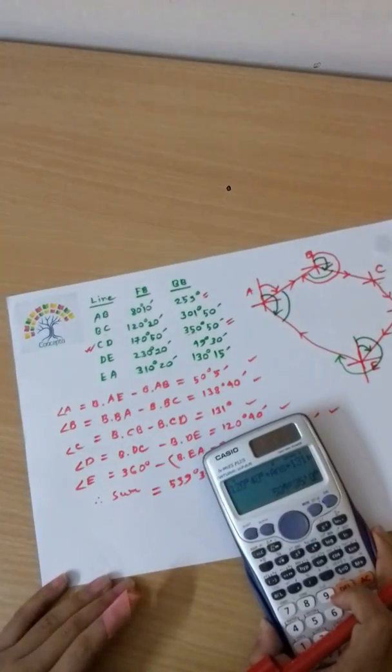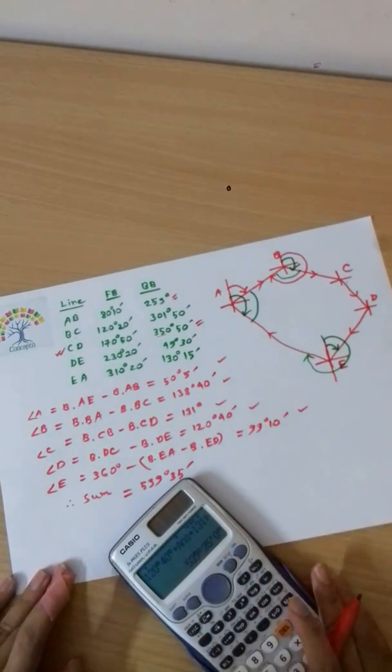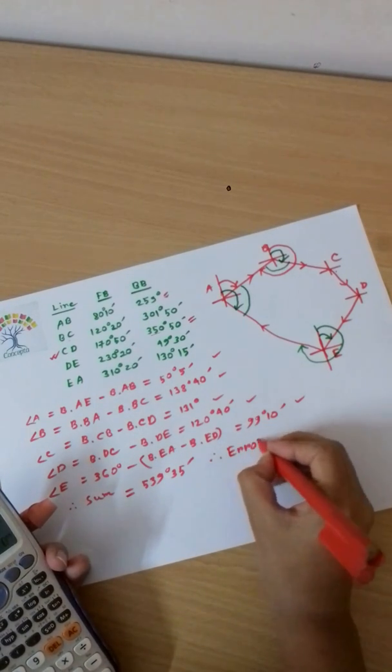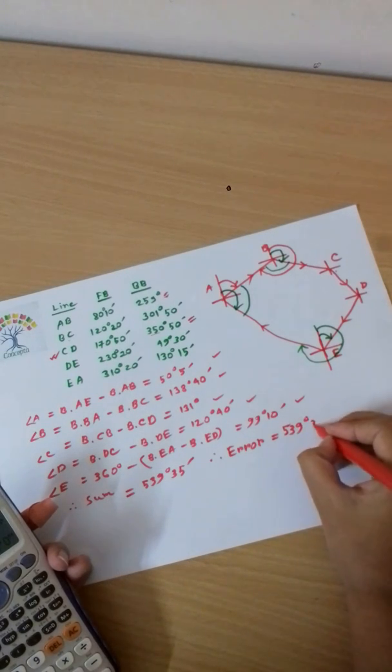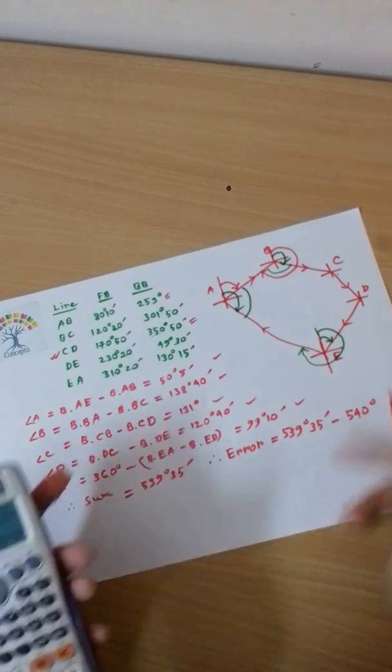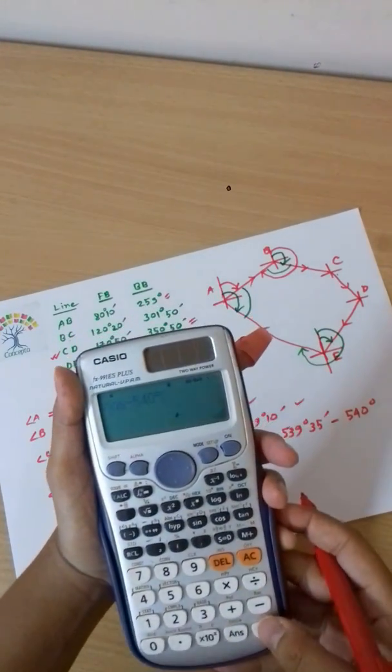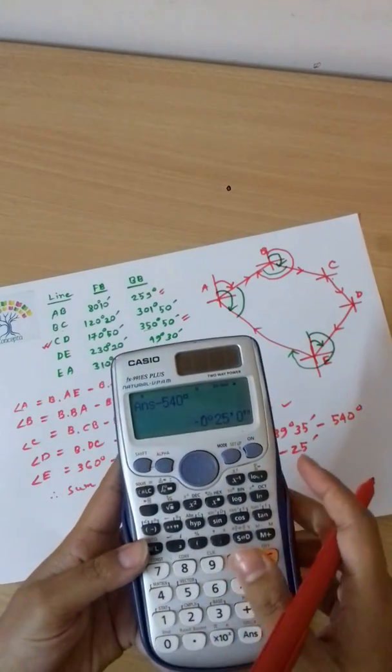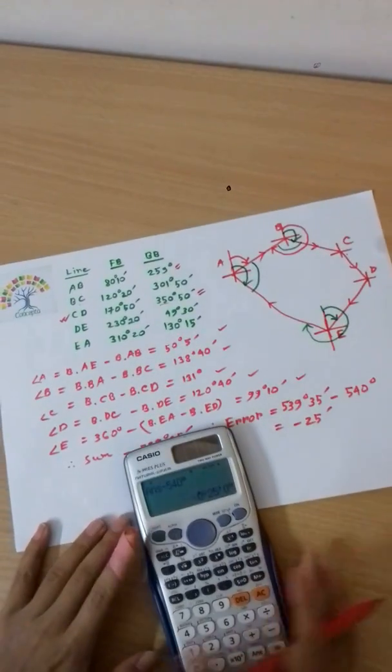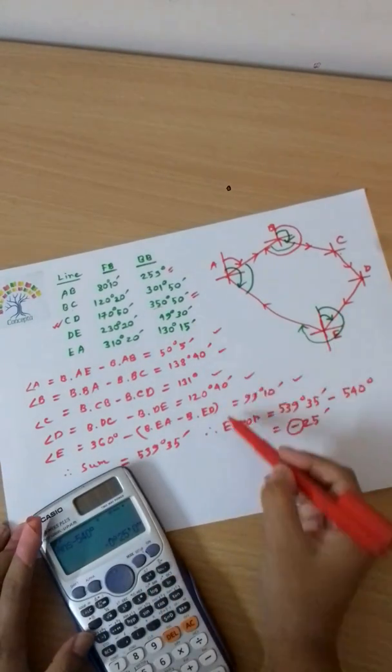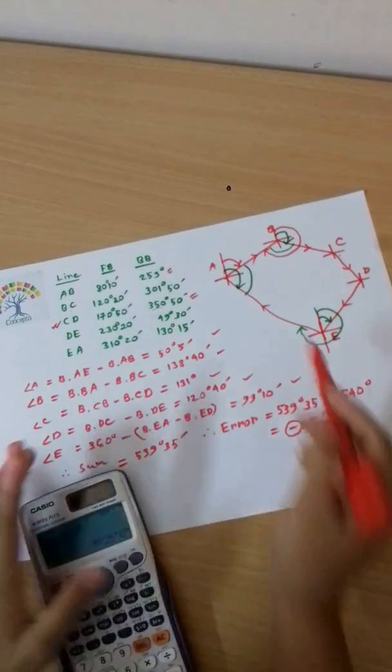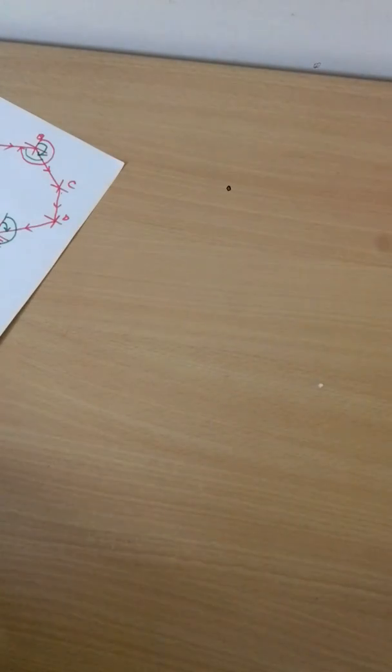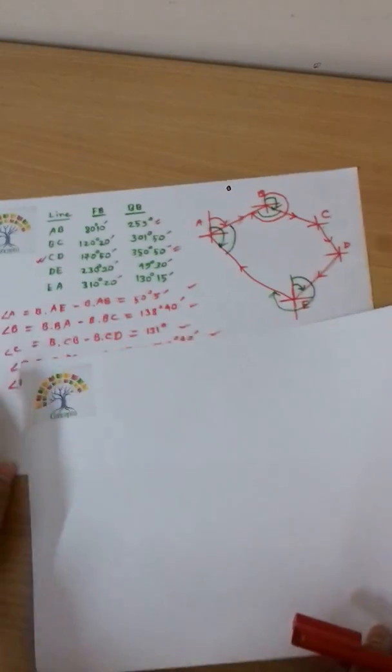The theoretical sum for a pentagon should be 540 degrees, but we got 539 degrees 35 minutes. The error is 539 degrees 35 minutes minus 540 degrees, which equals minus 25 minutes. We need to apply a positive correction of 5 minutes to each angle.